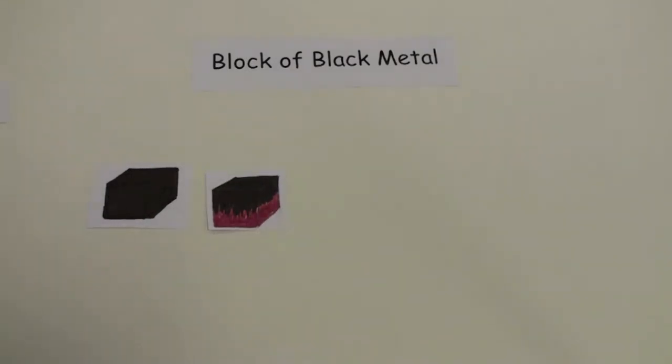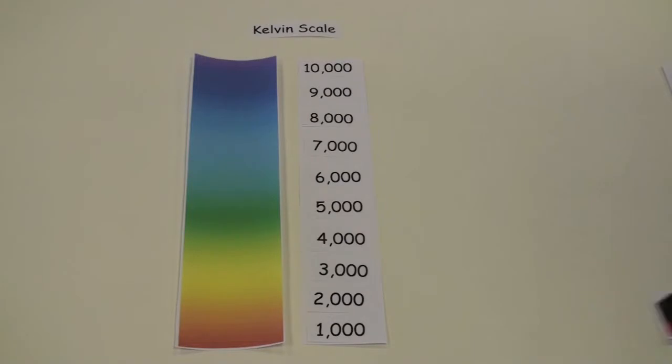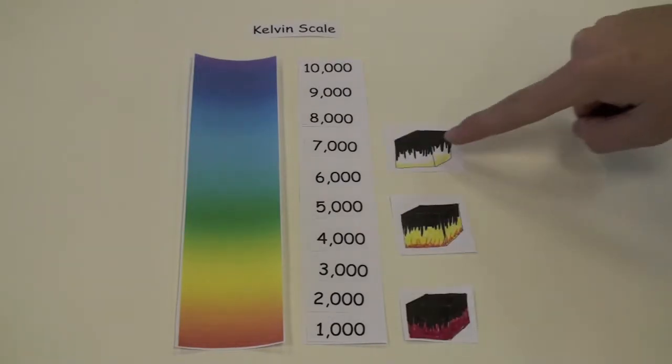When the metal is heated, it turns red, then yellow, then white, and finally blue. We then match the color to that temperature on the Kelvin scale, and we have our color temperature.